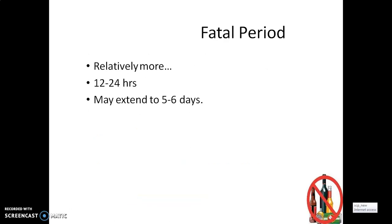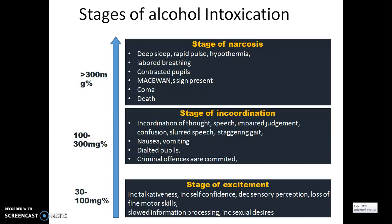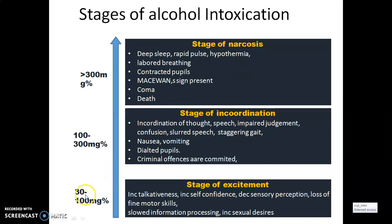Coming to the fatal period, it is relatively more than 12 to 24 hours, and sometimes it may extend up to 5 to 6 days. This is the stage of alcohol intoxication. We can observe three stages according to the mg percentage in the body. Stage of excitement, stage of incoordination, and stage of narcosis. At alcohol concentration in the range of 30 to 100 mg percent, the stage of excitement can be seen.